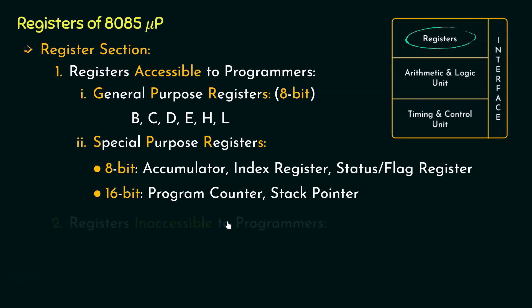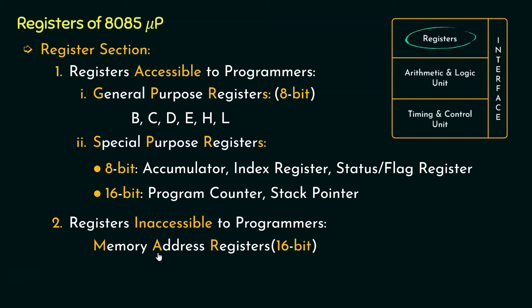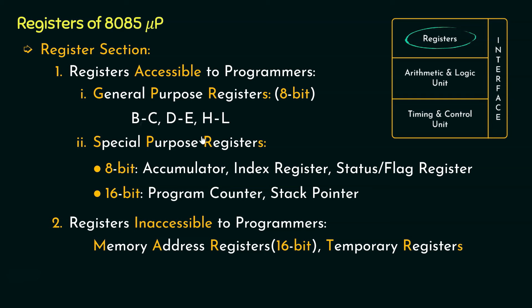Now coming to the second category, we have registers which are inaccessible to the programmers. Here we have MAR — memory address registers — which are 16 bits. Then we have the temporary registers and a few more registers that are inaccessible to programmers. By the way, the general purpose registers, which are individually 8 bits, can also be used as register pairs to facilitate 16-bit storage.